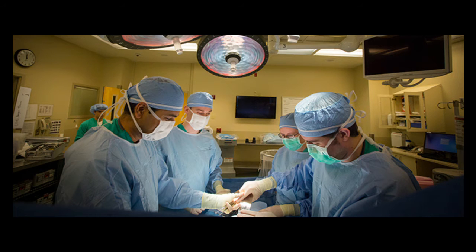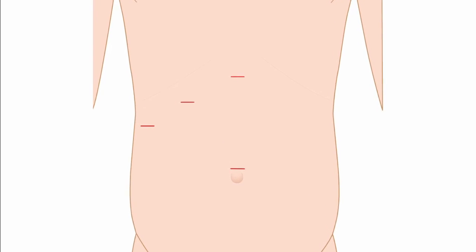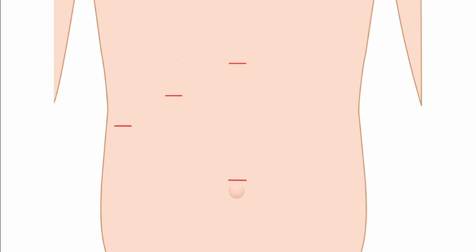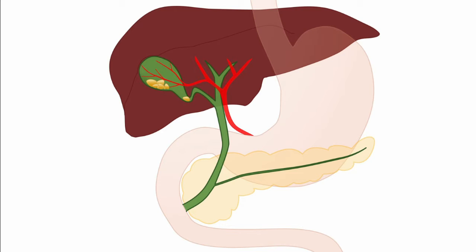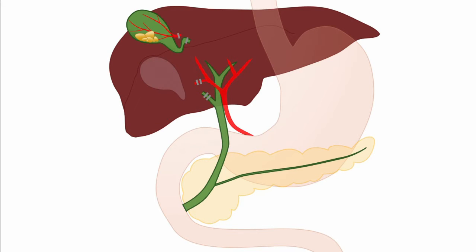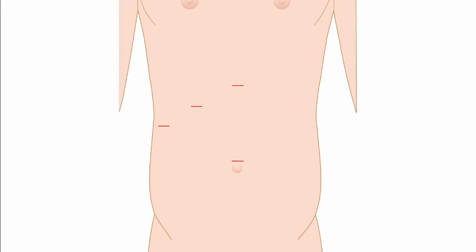Your surgery will be done in an operating room while you are completely asleep. The length of the procedure can vary, but is usually one to three hours. It is typically done through four small incisions with the help of a long camera — we call this laparoscopic surgery. Once we have entered your abdomen, the gallbladder is located. We identify the artery that feeds the gallbladder and the bile duct that leads to it, taking great care to avoid the many other structures nearby. Clips are placed over the duct, then the duct is divided between clips. The same is done for the artery. The gallbladder is carefully separated from the liver, placed in a bag, and removed through the largest incision. Your incisions are then closed and the procedure is complete.